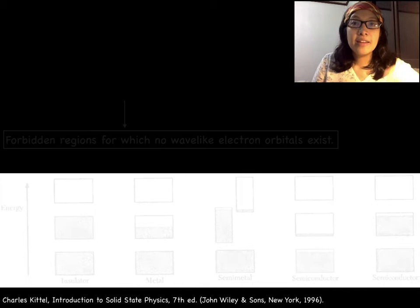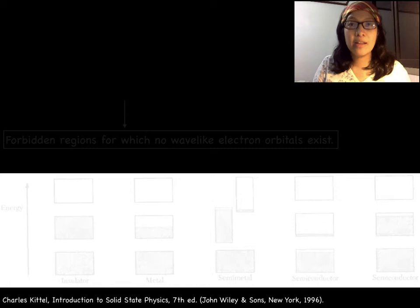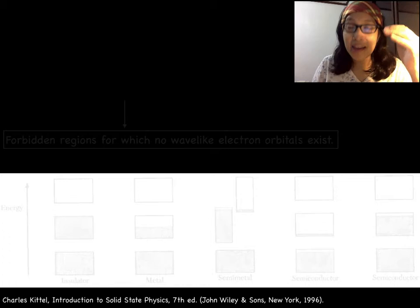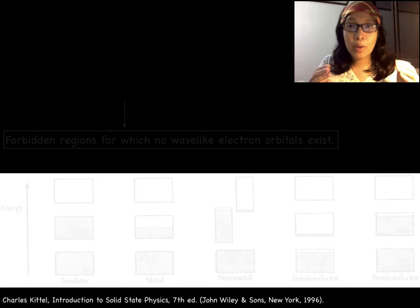Name one difference between a good conductor and a good insulator. The difference in terms of electrical resistivity is striking. The electrical resistivity of a pure metal may be as low as 10 to the minus 10 ohm centimeter at a temperature of 1 kelvin, while the electrical resistivity of a good insulator can be as high as 10 to the 22 ohm centimeter. We see a wide range of 10 to the 32 ohm centimeter.